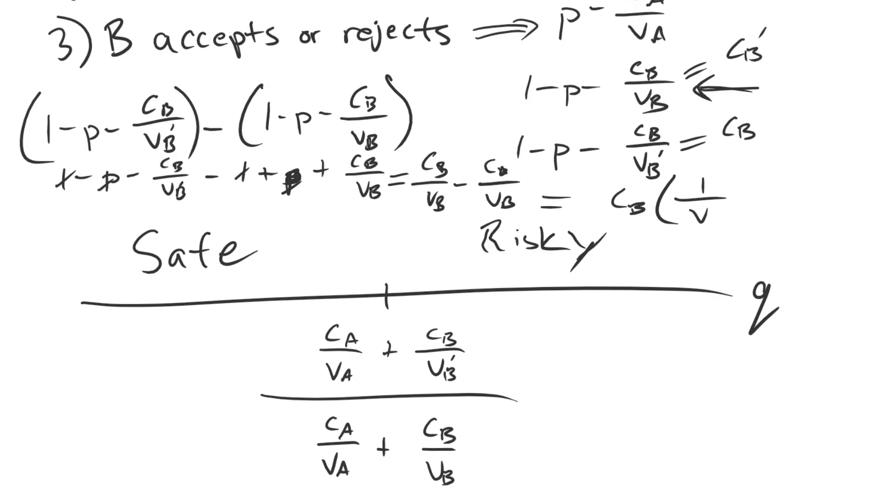You can rewrite that as CB times 1 over VB minus 1 over VB prime. You'll notice that this is a positive value because 1 over VB is greater than 1 over VB prime. As you increase CB, you're increasing that quantity. You're increasing the peace premium. Based off of what we've seen before and what we've learned about peace premiums previously, we might expect that when you increase B's cost for war, because you're increasing that peace premium, you're going to make A not want to overpay for peace as often.